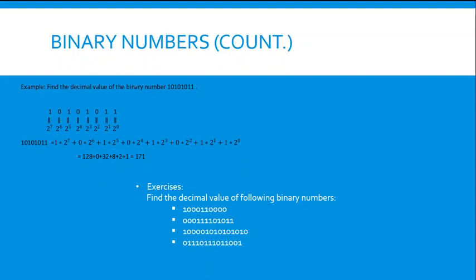Example: convert 10101011 from binary to decimal. Going right to left: position 0 is 1 → 2⁰ = 1; position 1 is 1 → 2¹ = 2; position 2 is 0 → skip; position 3 is 1 → 2³ = 8; position 4 is 0 → skip; position 5 is 1 → 2⁵ = 32; position 6 is 0 → skip; position 7 is 1 → 2⁷ = 128. Adding them all up: 1 + 2 + 8 + 32 + 128 = 171.